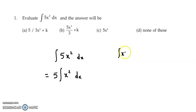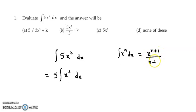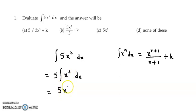This is of the form integration of x raised to n dx, and we know integration of x raised to n equals x raised to n+1 upon n+1 plus k. So using this formula, x² integration gives 5 times x cube upon 3 plus k. So this is the correct answer — option b.